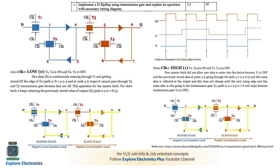The next question is: implement a D flip-flop using transmission gates and explain its operation with a necessary timing diagram. The D flip-flop circuit requires four transmission gates. The first half (shown in blue) acts as a negative-level latch, and the second half (shown in orange) acts as a positive-level latch. These two latches combined make the D flip-flop.